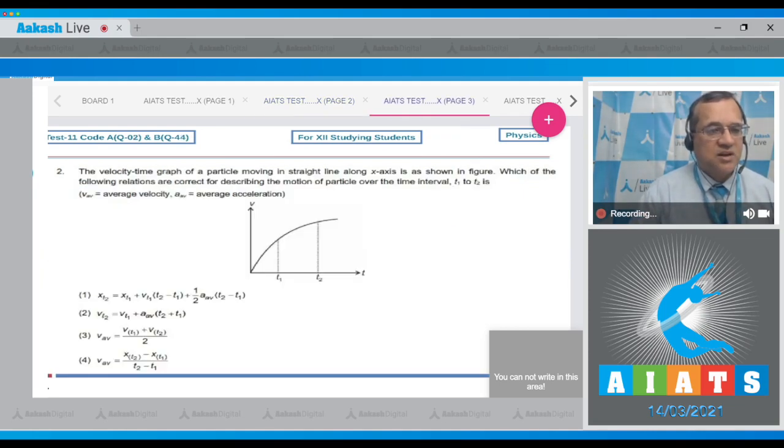The second question says that the velocity-time graph of a particle moving in a straight line along the x-axis is as shown in the figure. Which of the following relations are correct for describing the motion of the particle over time interval t1 to t2, where V_average is average velocity and A_average is average acceleration.